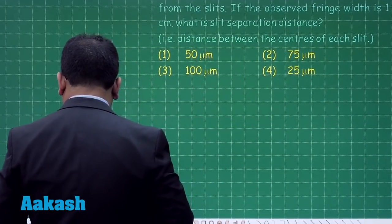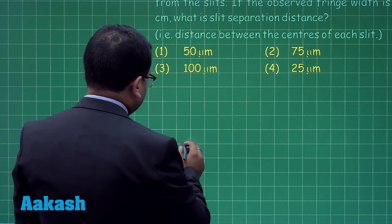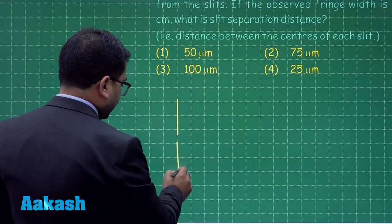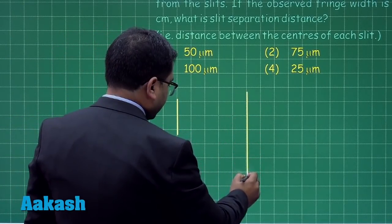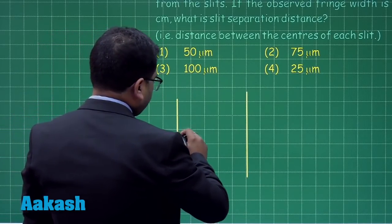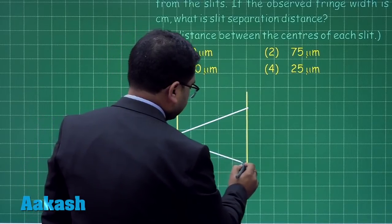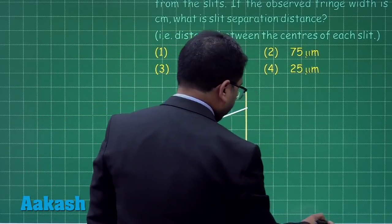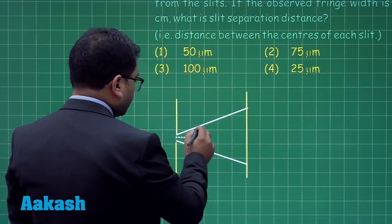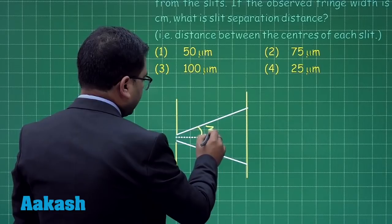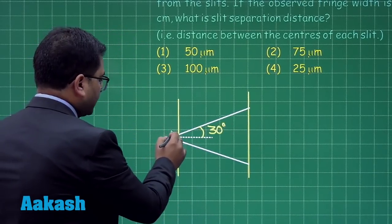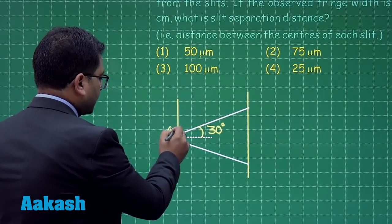Let me draw a rough pattern of a diffraction experiment - a single slit here and here is the screen. If I show the central maximum, it comes something like this. Here is the central maximum and the angle is 60 degrees, so the angle with respect to the central line is going to be 30 degrees.